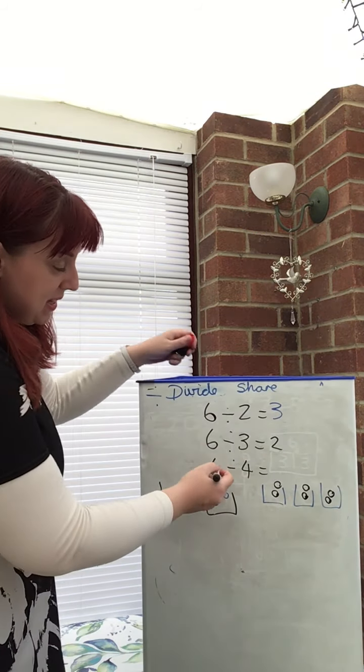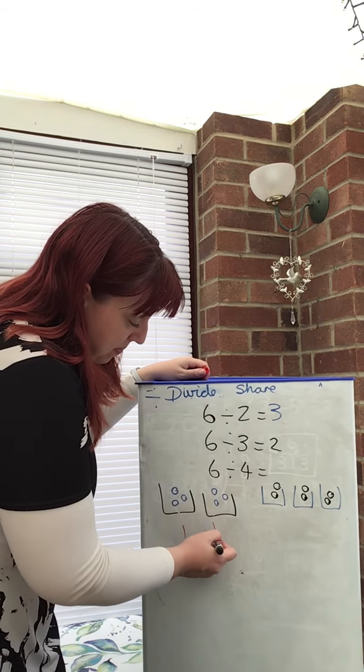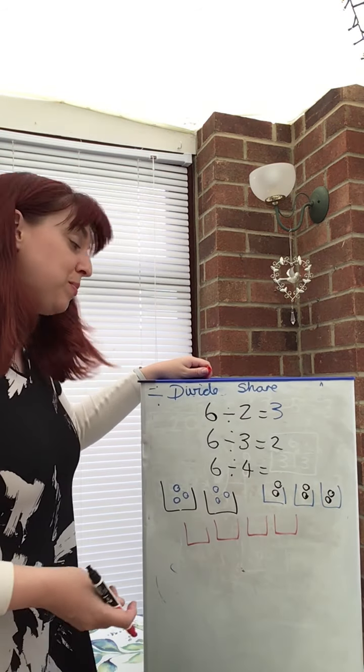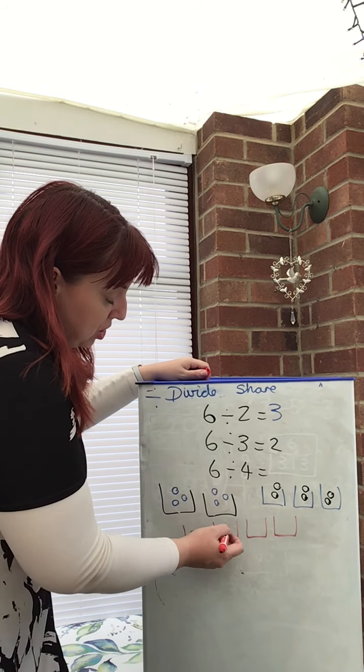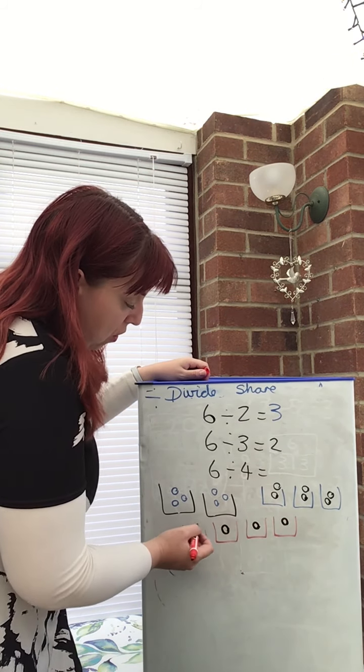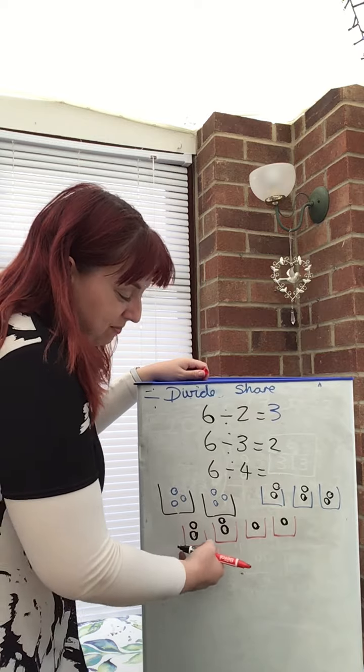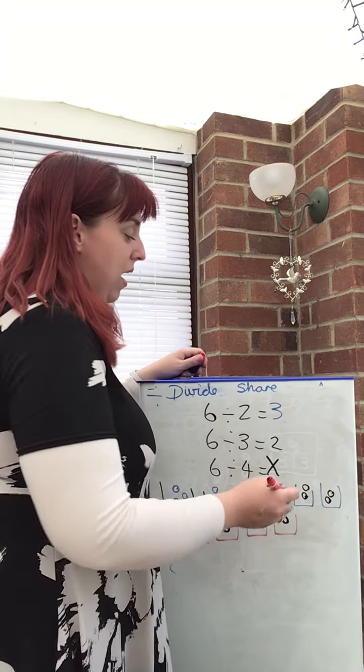Now I'm going to investigate my next number. Divided by four. One, two, three, four groups. Let's see. Sharing six. One for me, two, three, four, five, six. Nope. They're not equal. It doesn't work.